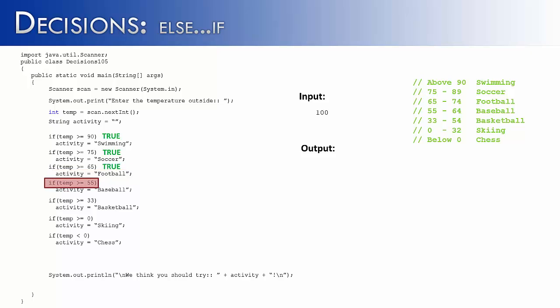Then in the next if statement, 100 is greater than or equal to 55, that would be true. Activity would be baseball, 100 is greater than or equal to 33, true. Activity would be basketball, and then finally, 100 is greater than or equal to 0, it would be true, and therefore activity would be set to skiing. It would check this last if statement, but 100 is not less than 0, and that would be false. Therefore it would print the last value that activity would be, and that is skiing.